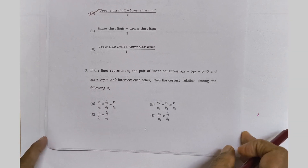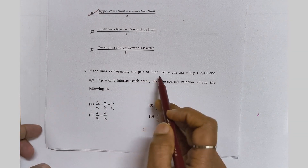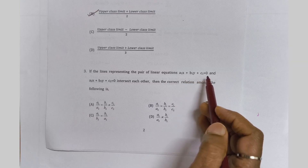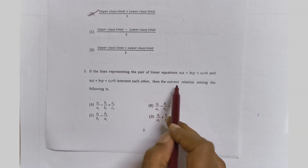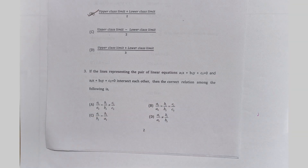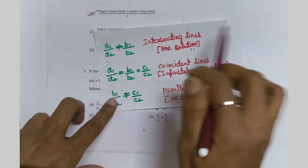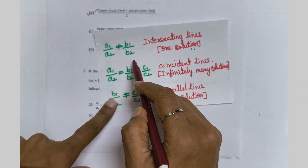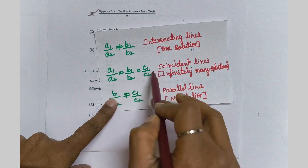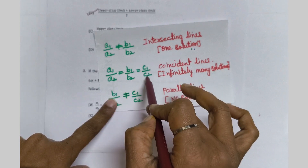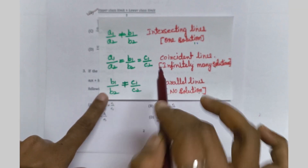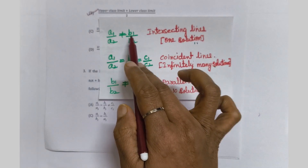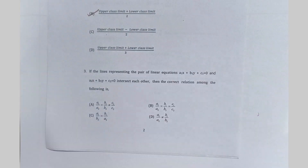Third question: if the lines representing a pair of linear equations a1x + b1y + c1 = 0 and a2x + b2y + c2 = 0 intersect each other, then the correct relation is a1/a2 ≠ b1/b2. For coincident lines: a1/a2 = b1/b2 = c1/c2. For parallel lines: b1/b2 ≠ c1/c2. Here he is asking intersecting, so the answer is a1/a2 ≠ b1/b2.